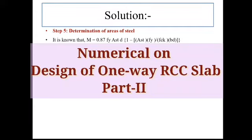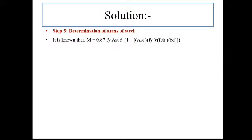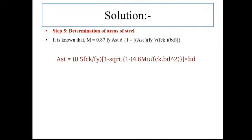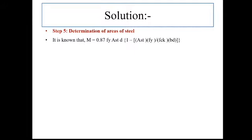The initial equation from which we have obtained AST equals 0.5 into FCK divided by F5, in bracket 1 minus under root of 1 minus 4.6 MU (factored moment) divided by FCK BD squared, into BD. Using the earlier equation M equals 0.87 Fy into AST into D in bracket 1 minus AST into Fy divided by FCK into BD, by putting values of bending moment, depth, and material grades, we can get the AST required.